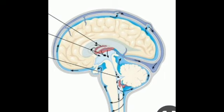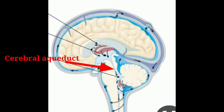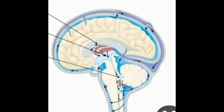CSF secreted from the lateral ventricle passes through the interventricular foramen to the third ventricle. From there, additional CSF is added from the choroid plexus of the third ventricle, and this bulk of CSF passes through the cerebral aqueduct, or aqueduct of Sylvius, to the fourth ventricle. From the fourth ventricle, CSF passes through the foramen of Luschka and foramen of Magendie to the subarachnoid space.